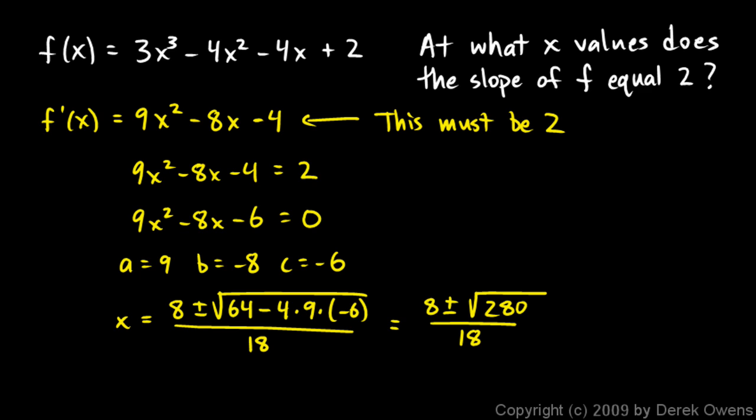And so you do 8 plus the square root of 280 over 18. And that gives you about approximately 1.374. And you do 8 minus the square root of 280 over 18. And you get negative 0.485 approximately. And you could leave your answers in simplified radical form also. I've just converted them to decimals and rounded to three decimal places. But these are the x values at which the slope of the original function is 2.